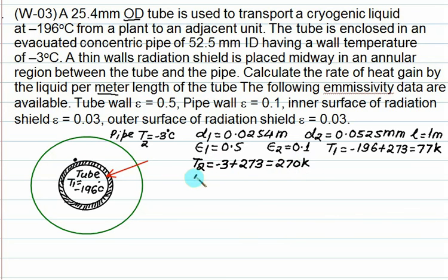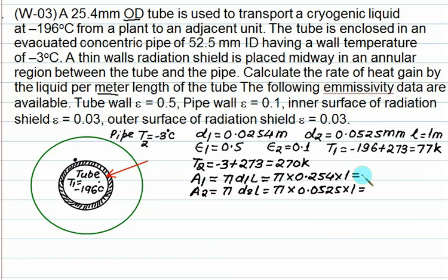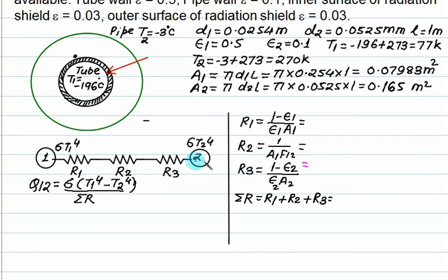We can calculate area 1. This is cylinder. Area 1 is pi D1 L. A2 is pi D2 L. Area A1 is 0.07983 meter square. Area A2 is 0.165 meter square. We will calculate R1, R2, R3. Then we will sum it. Then we will substitute and find out Q12. This one is heat transfer without shield.